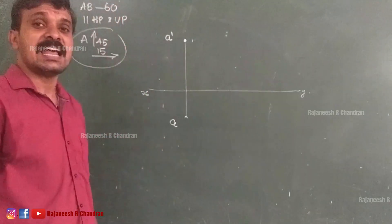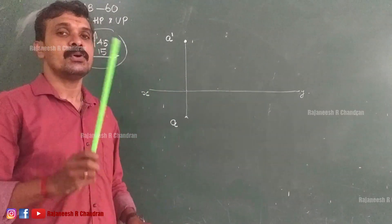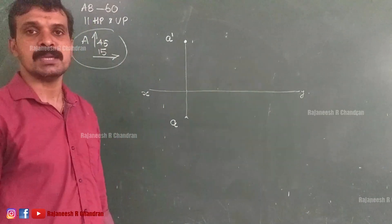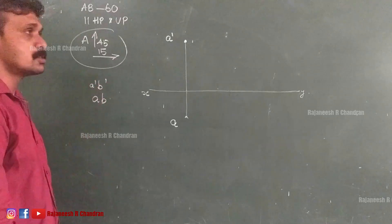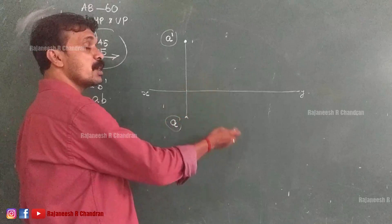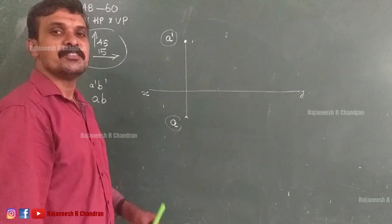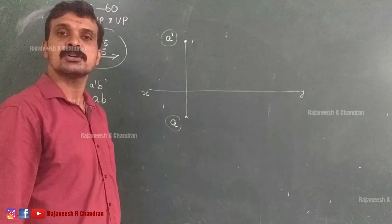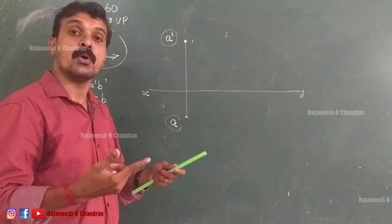It is given that the line AB is parallel to both HP and VP. Our rule states that when a line is parallel to both HP and VP, both projections will show true length and both projections will be parallel to the XY line. So the front view will be A dash B dash and the top view will be AB. We have A dash and A located. We need to obtain B dash and B. Since both A dash B dash and AB should be 60 mm and parallel to XY, we draw from A dash at a distance of 60 mm parallel to XY to locate B dash.